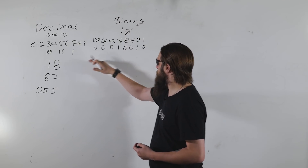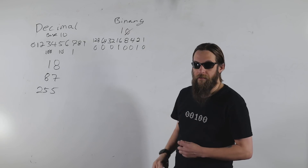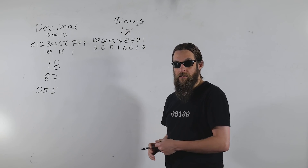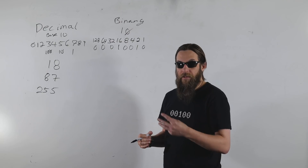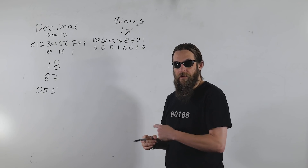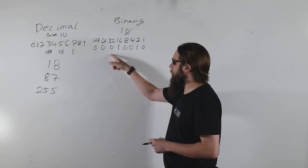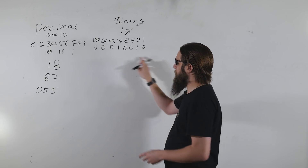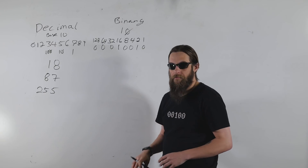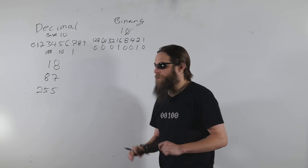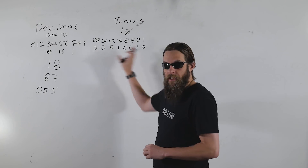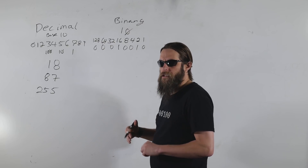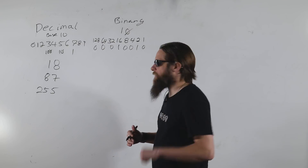You're probably wondering why eight binary digits — eight binary digits is effectively a byte of information. Each one of these ones and zeros is what we call a bit, so eight bits make up a byte. That's why we're sticking with eight digits.